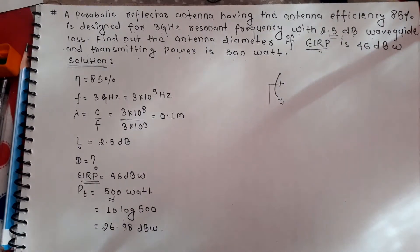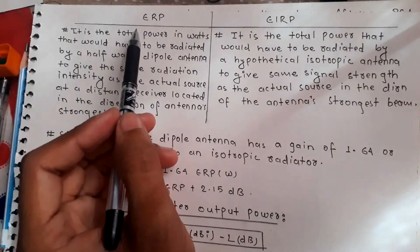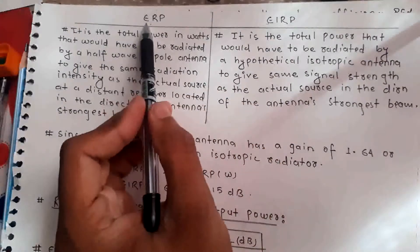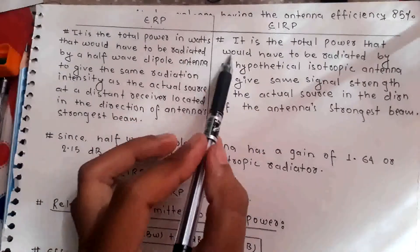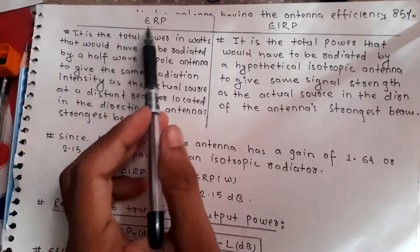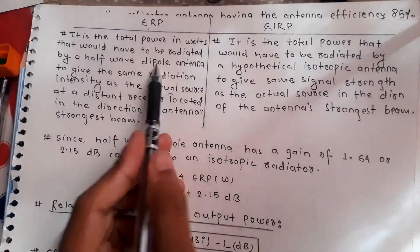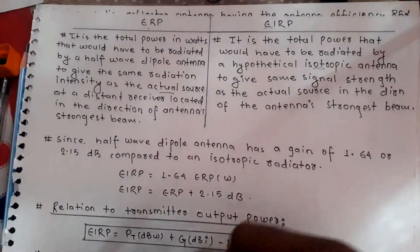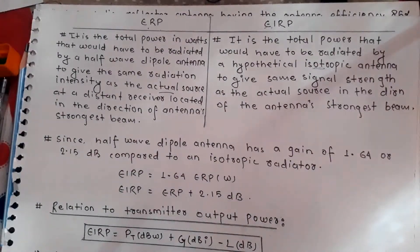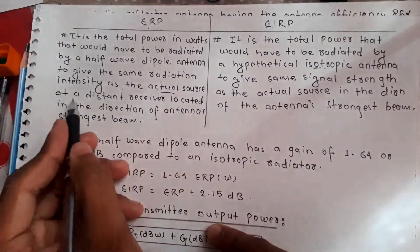We come across two terms: ERP (effective radiated power) and EIRP (effective isotropic radiated power). Both are similar, but ERP compares the actual antenna with a dipole antenna, while EIRP compares the actual antenna with an isotropic antenna. EIRP is the total power that would have to be radiated by an isotropic antenna to produce the same radiation intensity as the actual source at a distant receiver in the direction of the strongest beam.